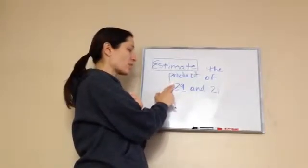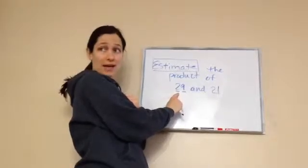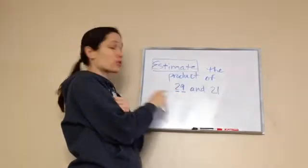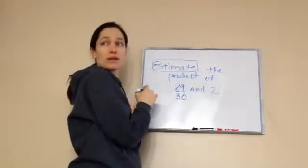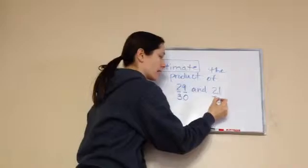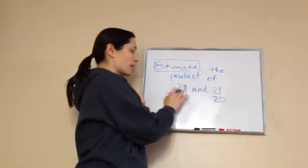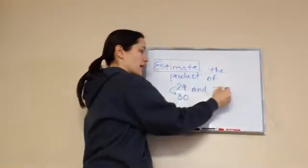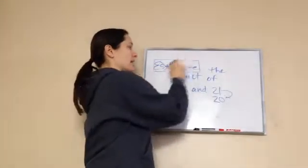But because we're working with 29, you're looking at the highest place value, 29. Okay. And so, what would 29 be? 30. Estimate. Very good. And what would 21 be? 20. Very good. Okay, so you're basically just rounding, and we've learned rounding already. So, 29 would become 30, and 21 would become 20. Okay? So, we're done estimating.